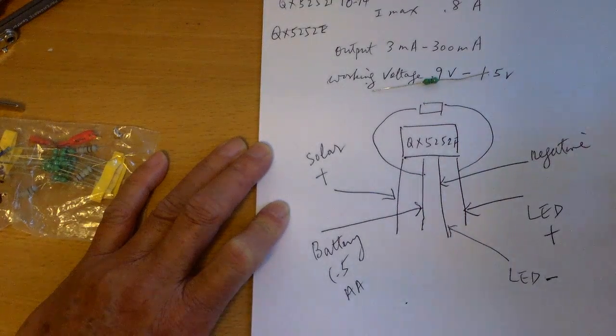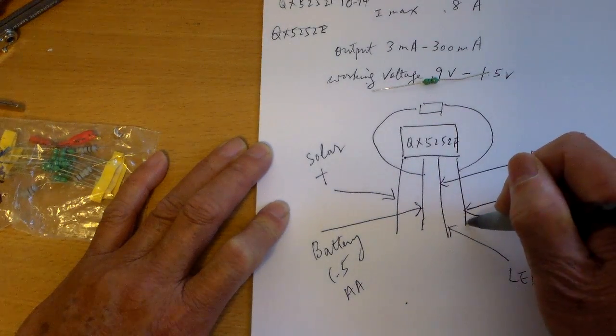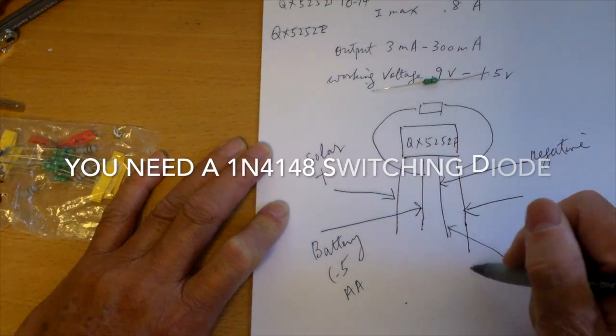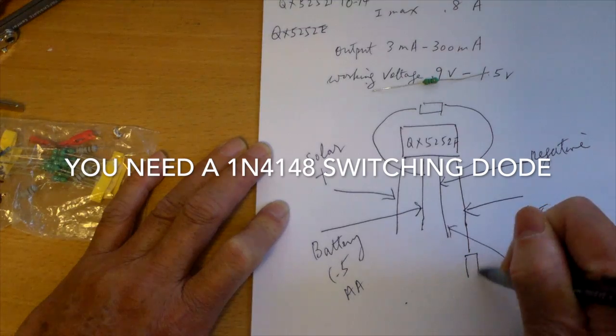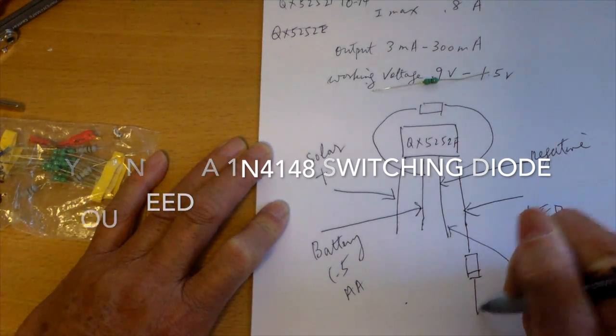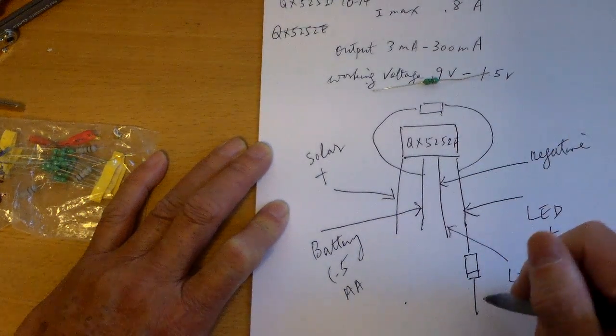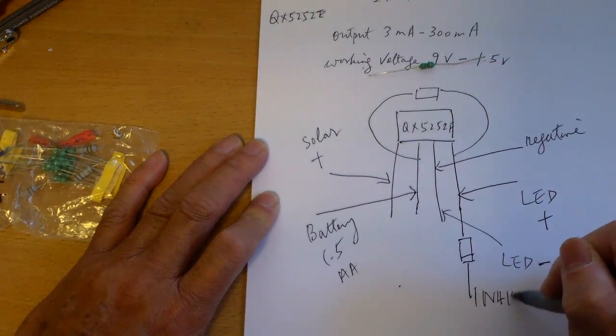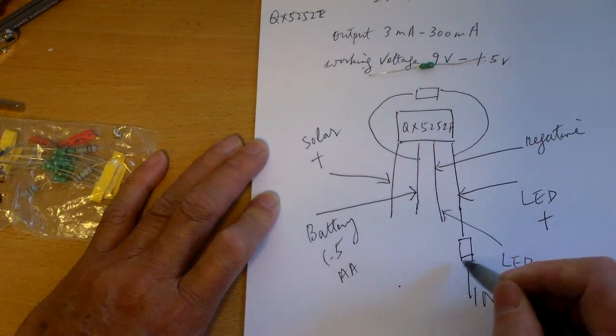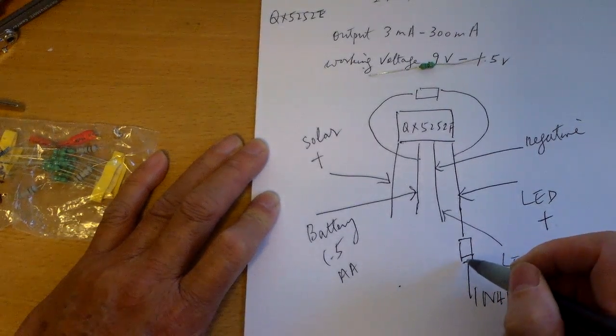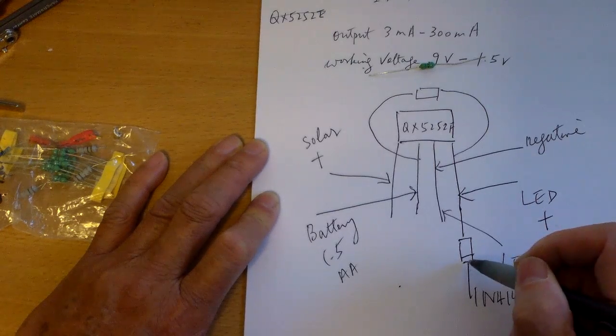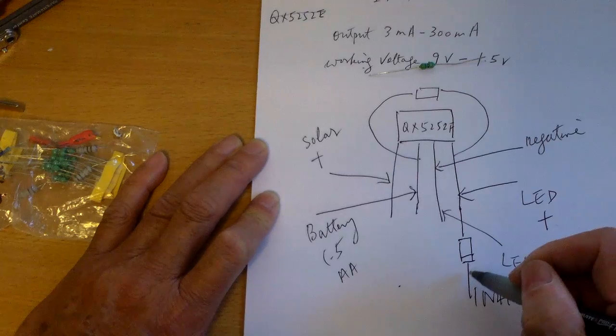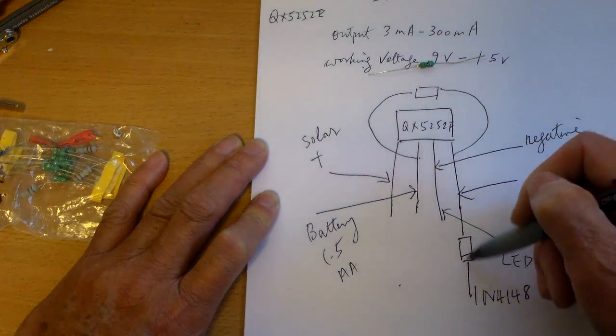You also need a switching diode. The one that I use is a 1N4148. You have the black band of the diode towards the positive of your LED, so you solder this onto your QX5252.